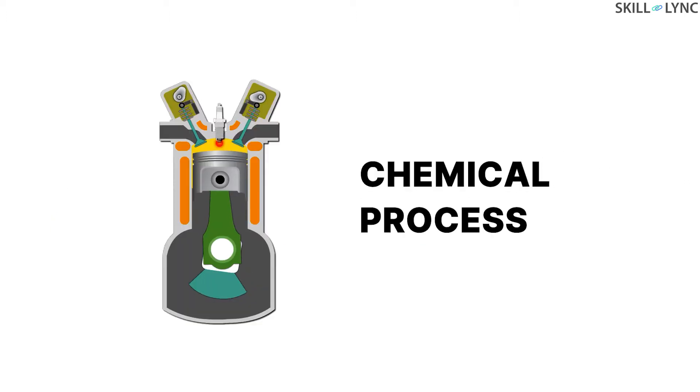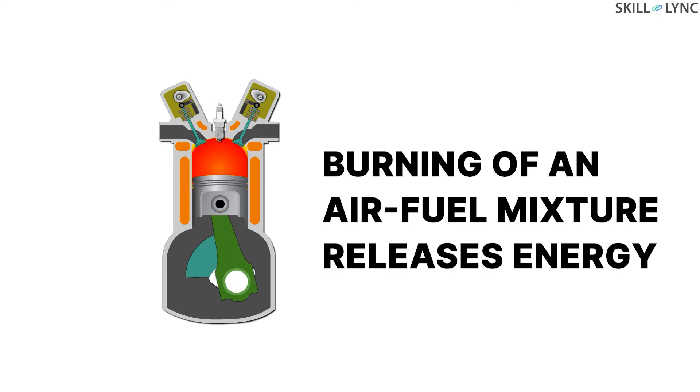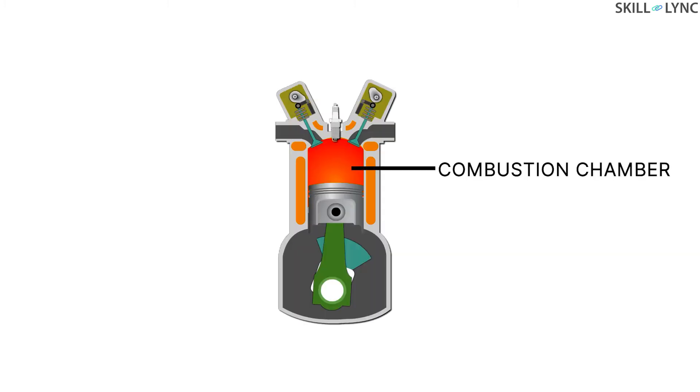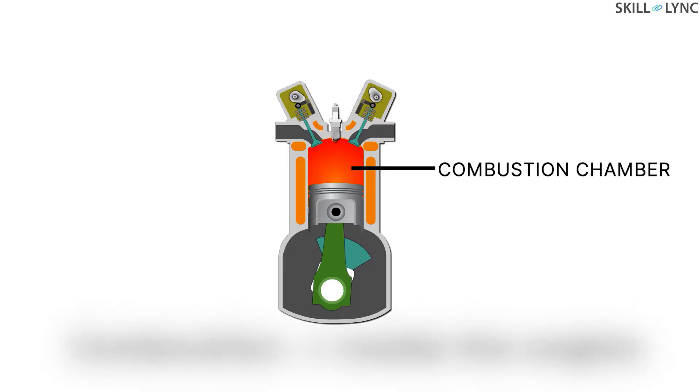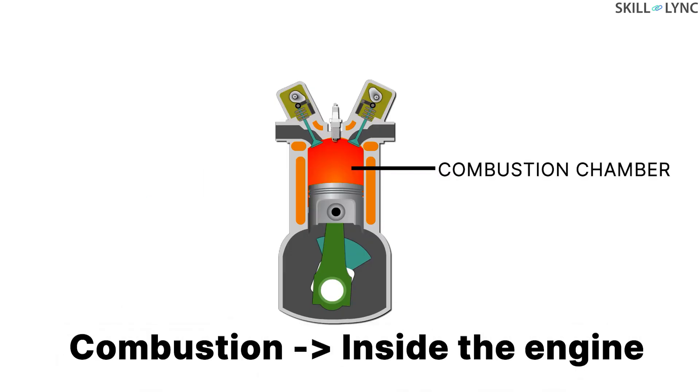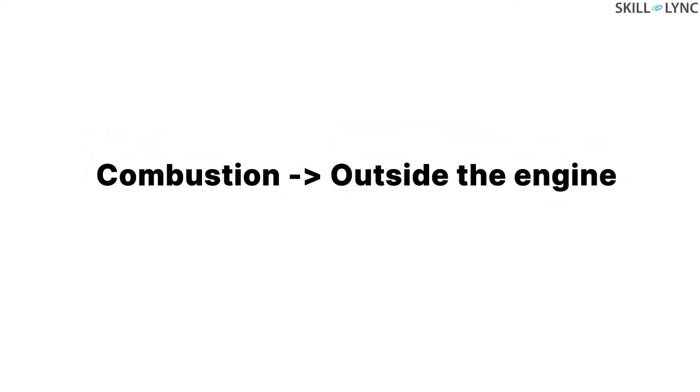Do you know what an IC engine is? We know that combustion is a chemical process in which the burning of an air fuel mixture releases energy. Based on where the combustion process takes place, engines have been classified as internal combustion engines and external combustion engines. Just as the name suggests, an internal combustion engine is a type of engine in which the combustion process takes place inside the engine itself in a confined space called the combustion chamber. On the other hand, there are engines in which the combustion process takes place outside the engine, and such engines are called external combustion engines.